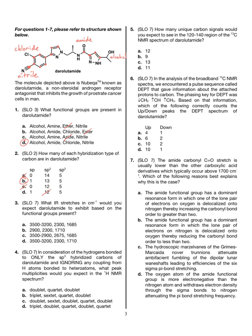Moving on to question 3: what IR stretches in wavenumbers would you expect deralidomide to exhibit based on the functional groups present? The correct answer is A. We have an alcohol. 2300 — that's the nitrile stretch. 1685 — that's the amide stretch. So represented there are regions 1, 2, and 3. The point is that when identifying functional groups, you need to associate what stretches you'll see in the IR as well.